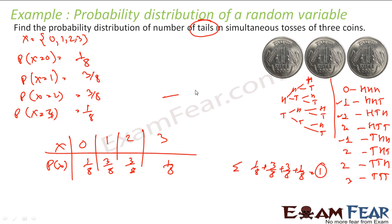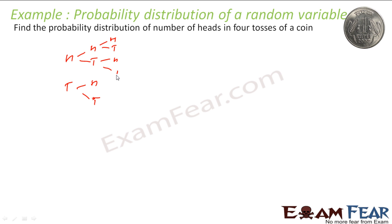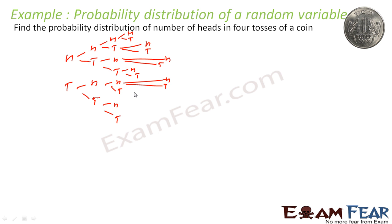Find the probability distribution of the number of heads in four tosses of a coin. This is very similar to the last question — there it was three coins, here it is four. You can solve it the same way. The first coin can be head or tail, second also head or tail, third and fourth coins similarly each can be head or tail.